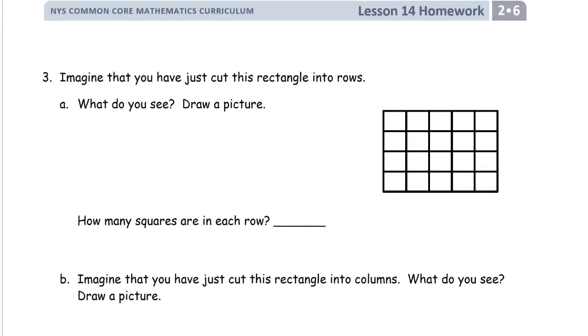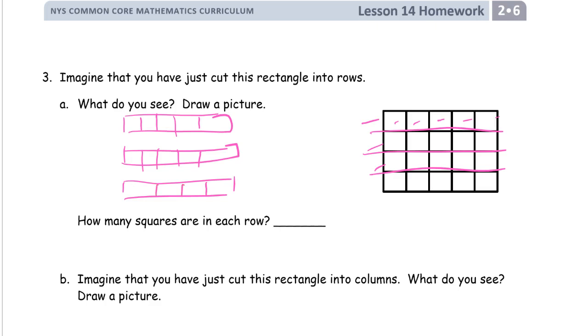Imagine you've just cut this rectangle into rows. That's these sideways. What do you see? Draw a picture. So we're going to see strips of 1, 2, 3, 4, 5 in each strip. And how many of those am I going to have? I'm going to have 1, 2, 3, and 4 of those. How many squares are in each row? There's 5.